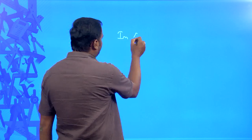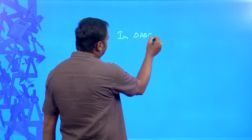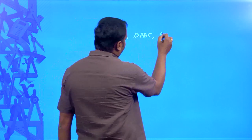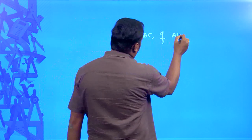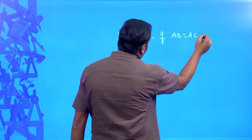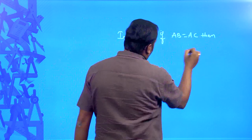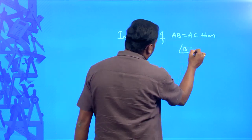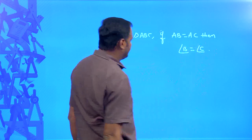Before we understand the word 'converse' and what it means, consider this example. There is a statement given: in triangle ABC, if AB is equal to AC, then angle B is equal to angle C. This is one statement given.